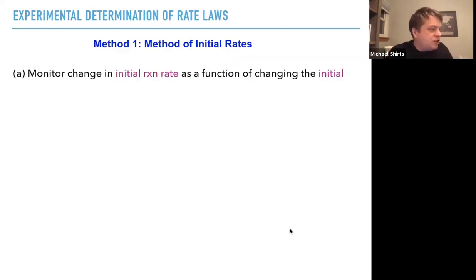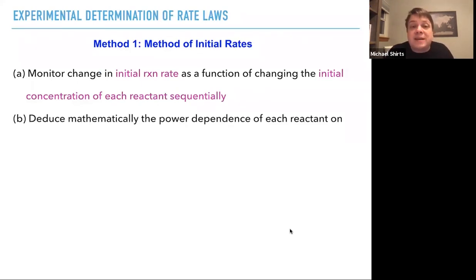So you monitor the change in the initial reaction rate. Again, it's the initial reaction rate because it's much harder to keep track of how much there is of everything after amount of time, as a function of changing the initial concentrations of each reactant sequentially. And then there's a procedure to deduce mathematically the power dependence of each reactant on the overall reaction rate from these relative changes. And then once you have those rates, you can solve for the rate constant.